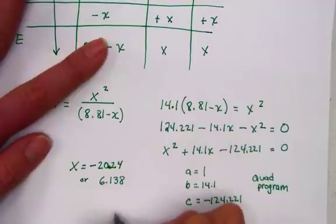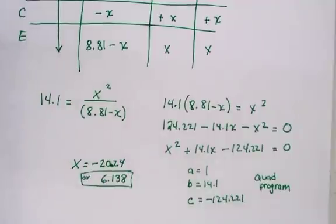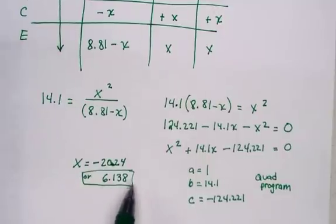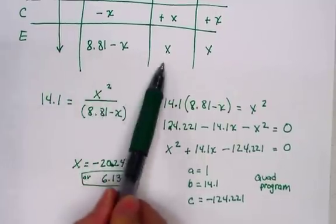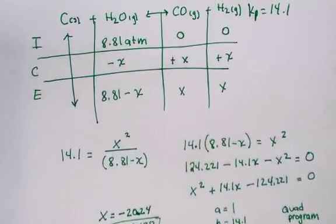Knowing that pressure cannot be negative, we are solving as 6.138 for the value of x. When we've decided the value for x, 6.138, we need to go back and just fill in the values as we found them, subbing in for the value of x.